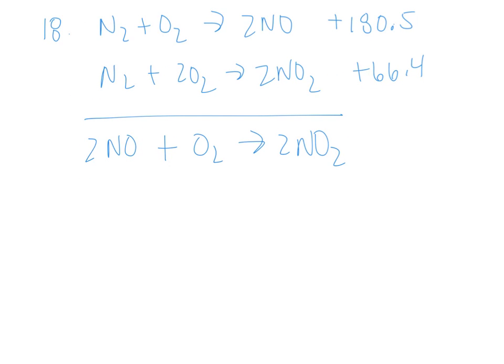Number 18 is a similar problem. You're given two equations and asked to come up with the desired equation of 2NO plus O2 yields 2NO2. So again, looking at the two equations I'm given, I see I've got 2NO in the first one, which matches the 2NO below, but I am going to need to flip this to make it a reactant, so this becomes negative instead of positive. The N2 yielding NO2 is the correct product and amount, so this one I can leave.